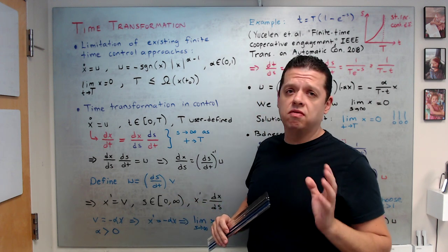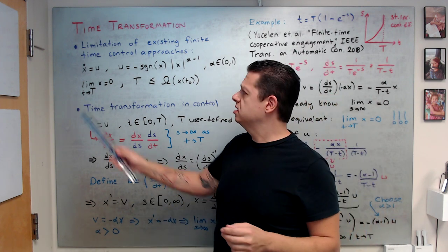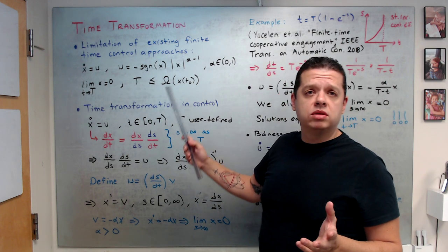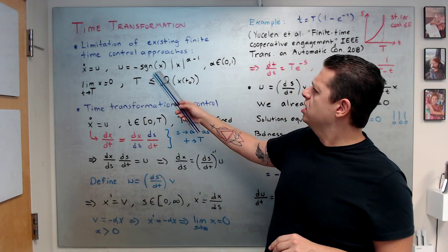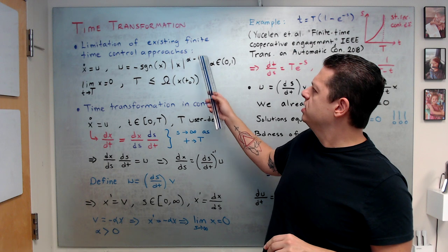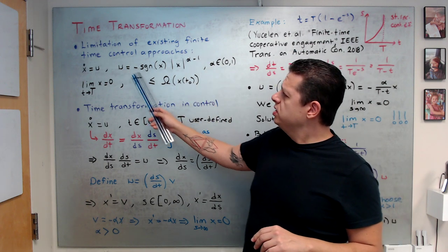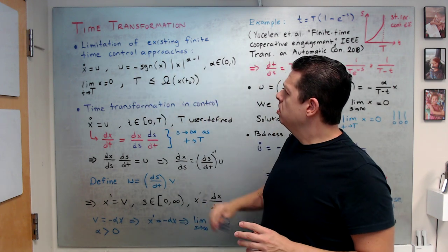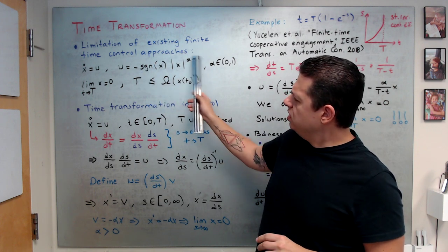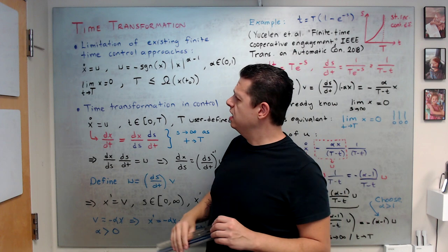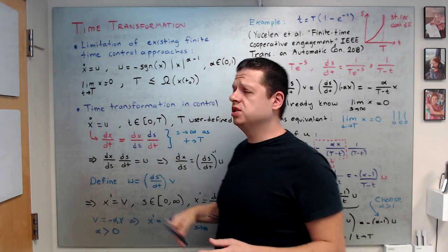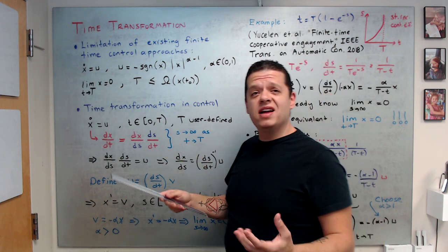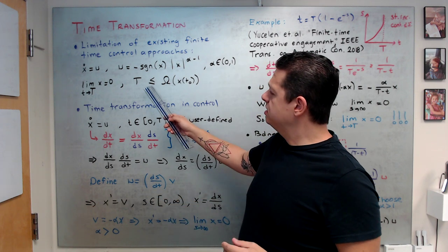For example, consider the scalar system x-dot equals u. Existing methods commonly use a control signal based on sign functions — something like |x|^{α-1} · sign(x) with α between 0 and 1. Papers on finite time control consider these discontinuous control signals and guarantee that x goes to 0 as t approaches capital T, where capital T is the finite time convergence.